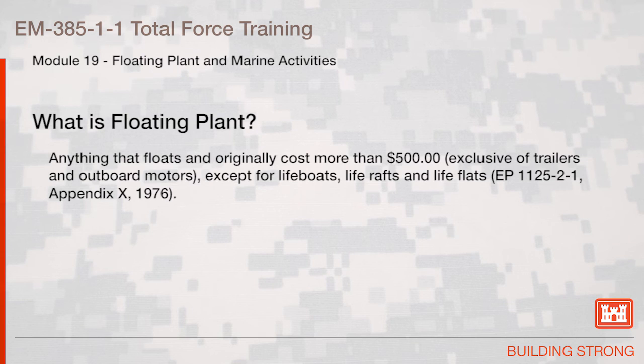What is a floating plant? A floating plant is defined as anything that floats and originally costs more than $500, exclusive of trailers and outboard motors, except for lifeboats, life rafts, and life flats, as governed by EP 1125-2-1 Appendix X from 1976.